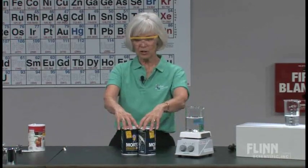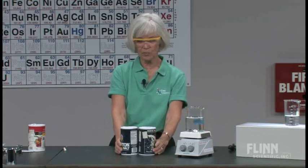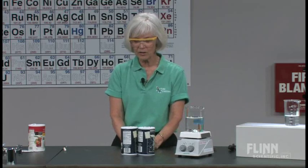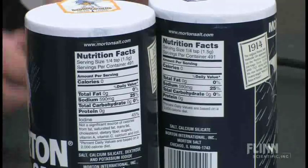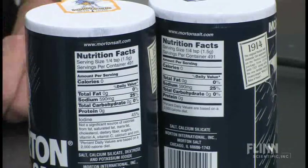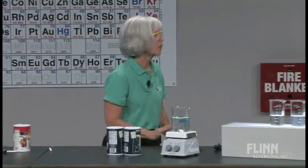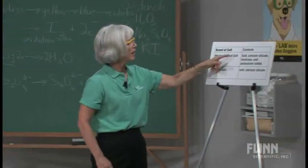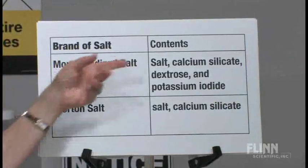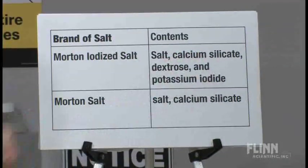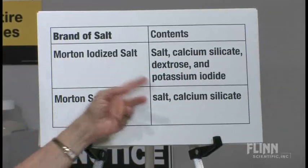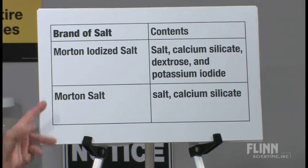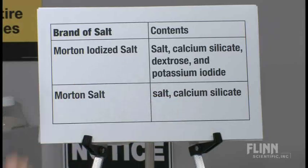With my students, I give them a little activity examining labels. We look at the labels on the back of the salt containers. Morton iodized salt ingredients: sodium chloride, calcium silicate, dextrose, and potassium iodide. Morton regular salt: just salt and calcium silicate. Why do we need calcium silicate in regular salt? If you know the structure of sodium chloride — cubic crystals — one cube sticks easily to another. Moisture causes the salt to clump.